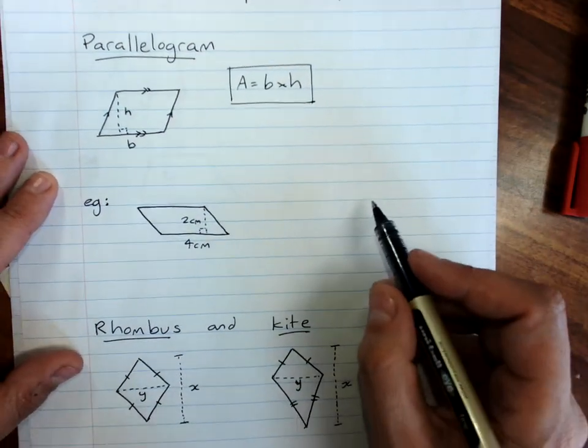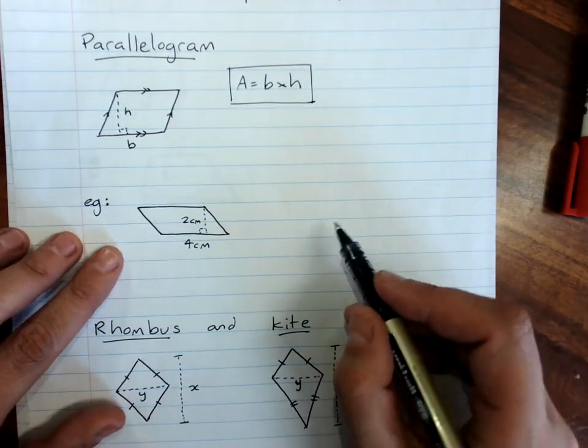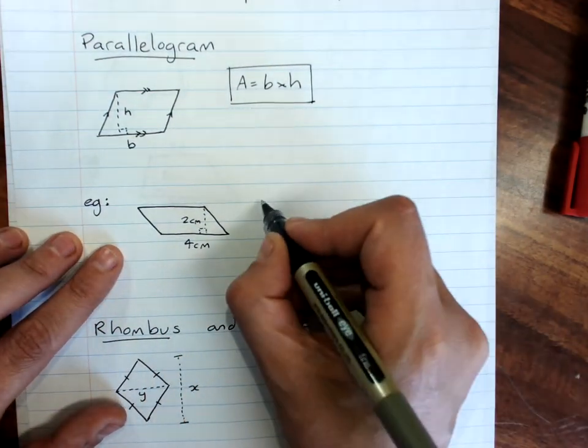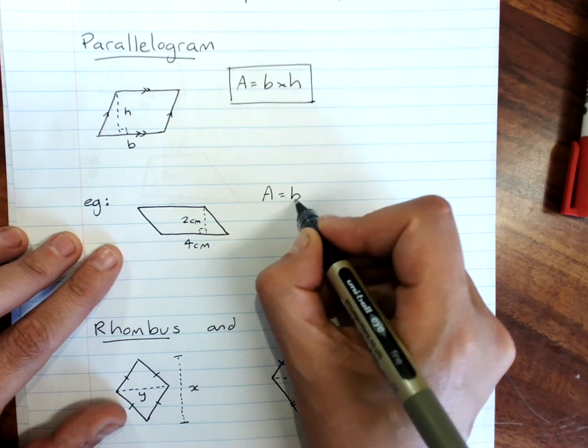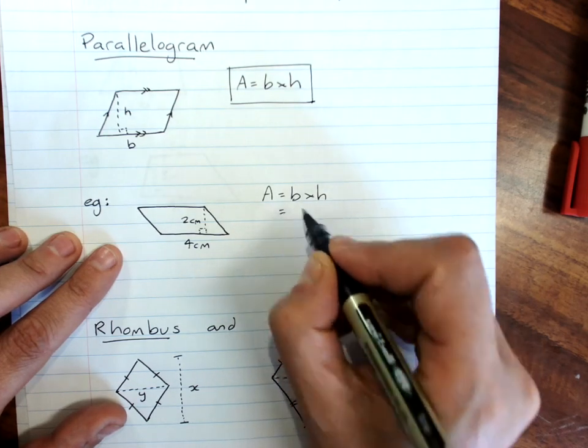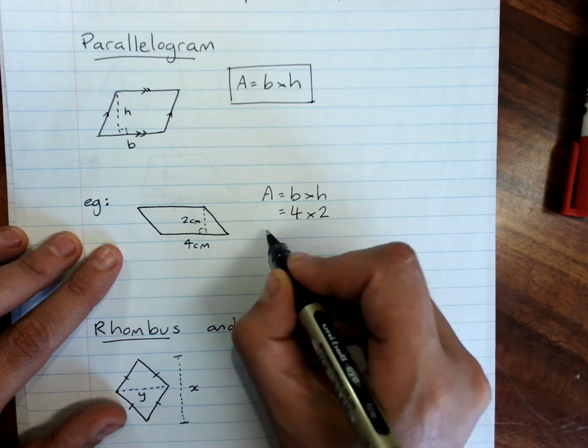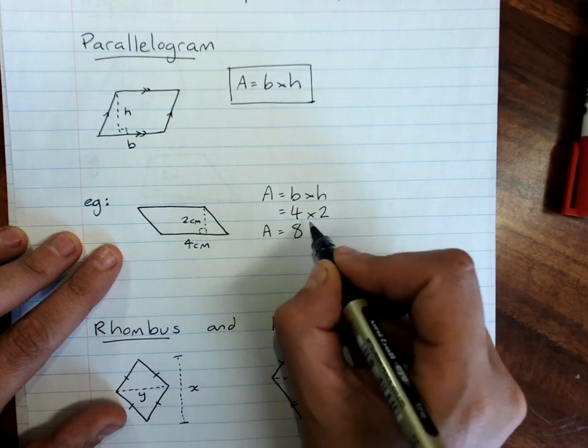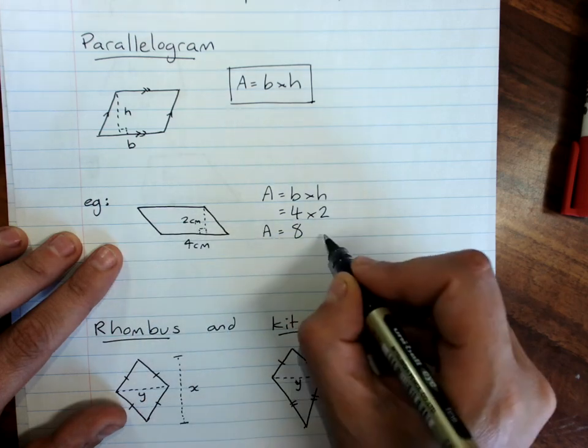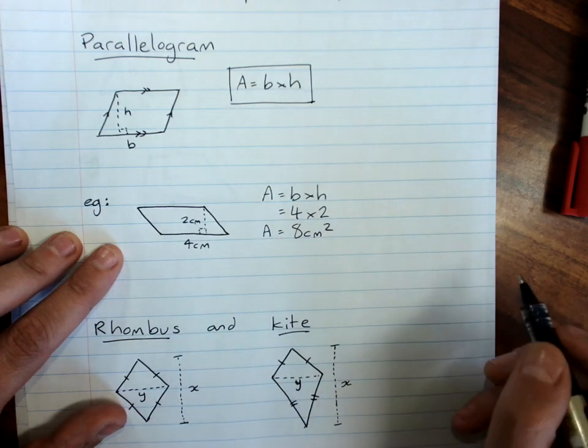For example, on this one, it's a parallelogram, a squashed rectangle. We write the formula: area equals base times height. We substitute the values—that's 4 times 2. So the area is 8. These were in centimeters, so that's 8 centimeters squared.